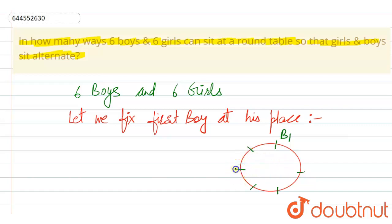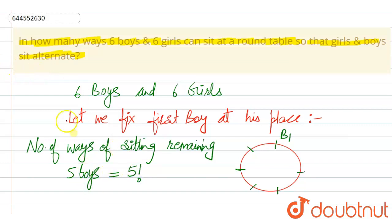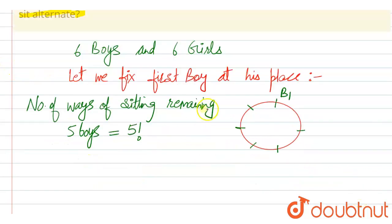So number of ways of sitting remaining five boys is equal to five factorial. So this is the way by which we will arrange the boys sitting in this round table in five factorial ways. Now we need to